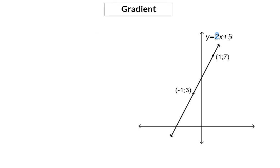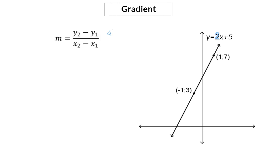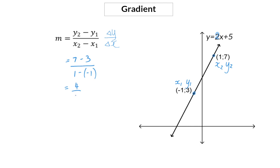The gradient gives us the change in y in terms of the change in x. This is calculated by getting the difference between the two y values and dividing that by the difference between the corresponding x values. So let's check the gradient of our sketch using this formula and the two given coordinates. Substituting, we get 7 minus 3 divided by 1 minus minus 1, which is 4 divided by 2, and that does give us the gradient of 2.